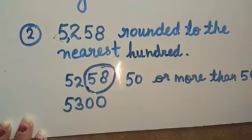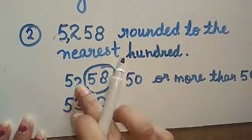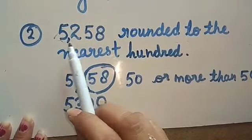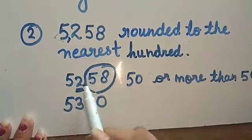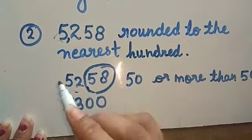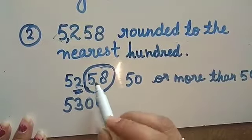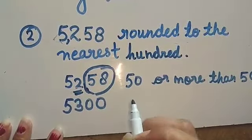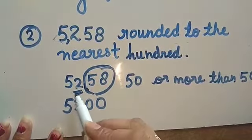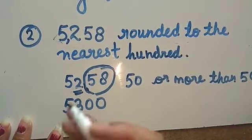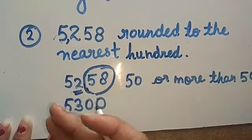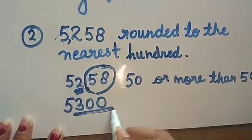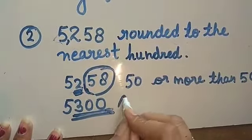Let me explain one more time, students. The question is rounded to the nearest hundred. If the value to the right is 50 or more than 50, we write the next hundred. Here 200 is given; after 200 the next hundred is 300. So in place of 200, we write 300, and that is our answer.